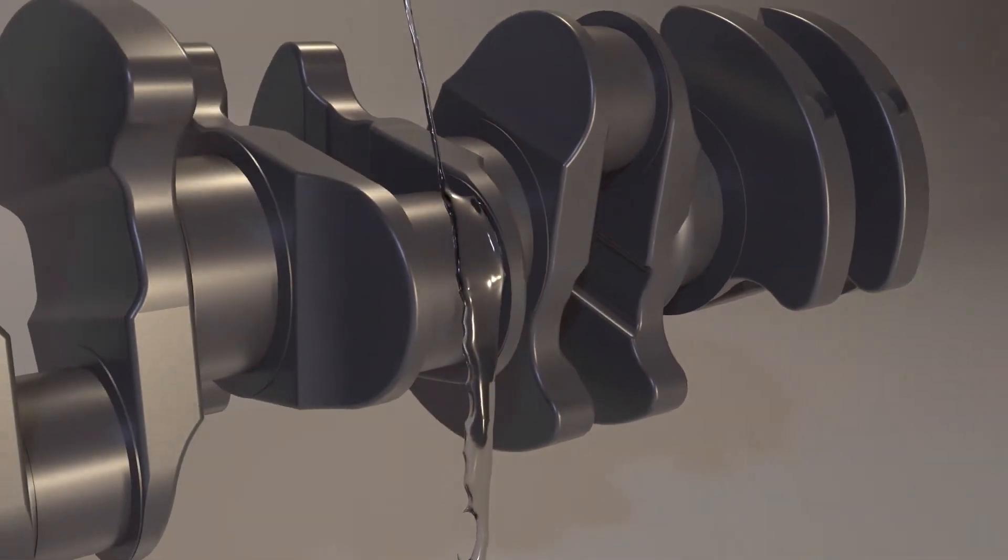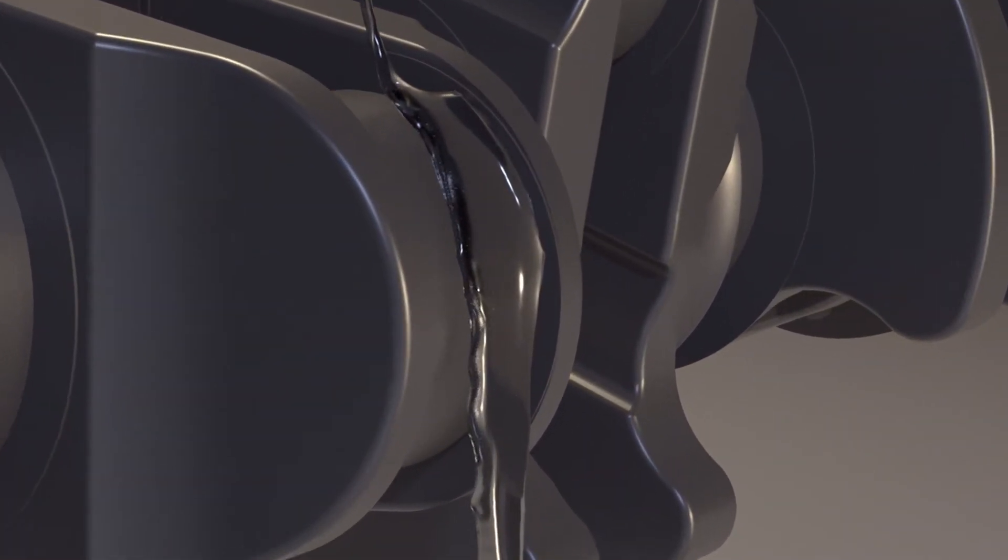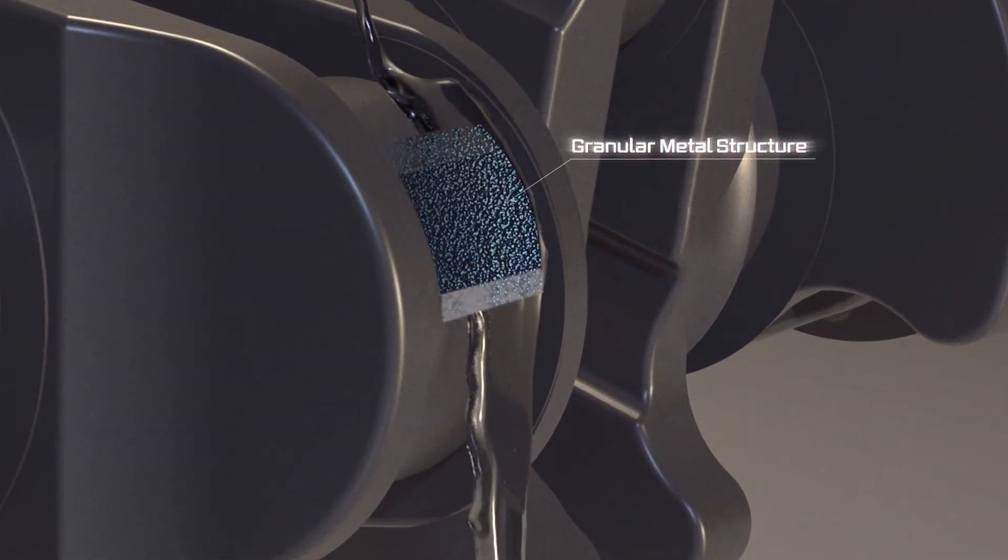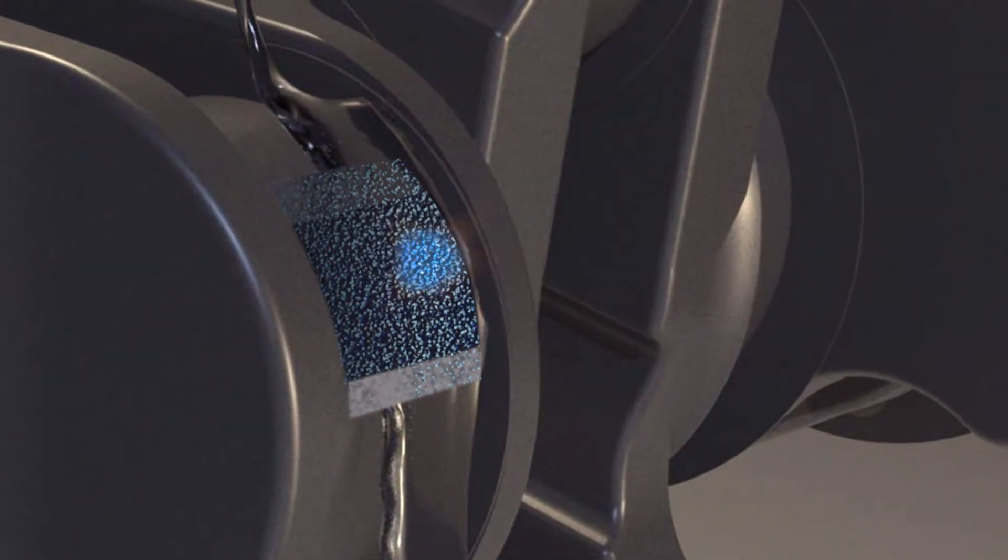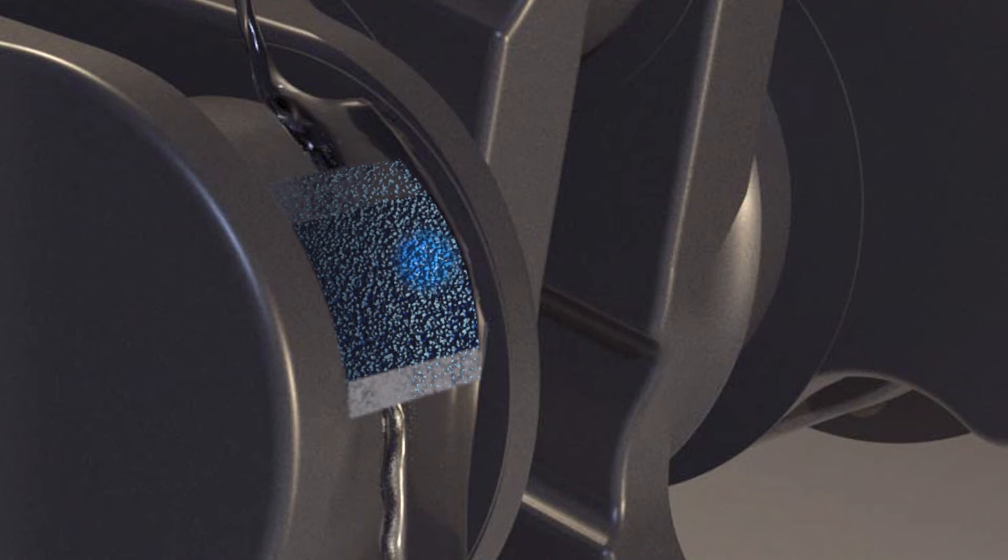Let's take a look at what laser peening is doing to the metal deep under the surface. Here is a close-up view of a metal surface and the granular metal structure below. The water forms an overlay that is transparent to the laser beam. The laser beam passes through the water to the surface of the metal.